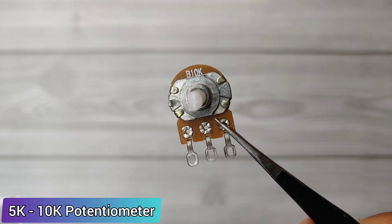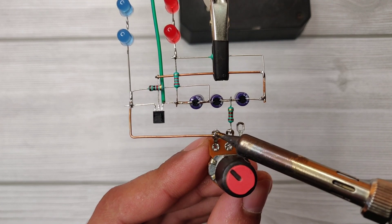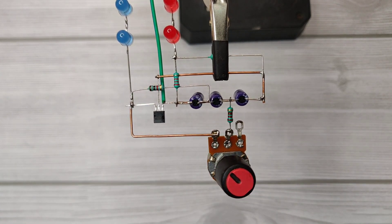Take a 5 to 10 kilo ohm potentiometer. Solder potentiometer pin 2 with the 220 ohm resistor and pin 3 with the emitter of the transistor.